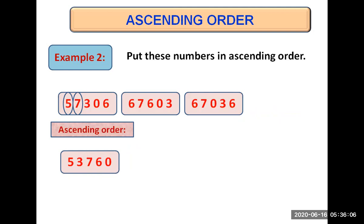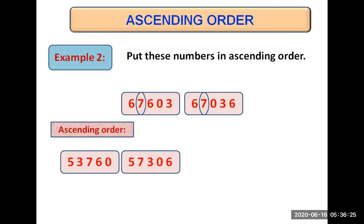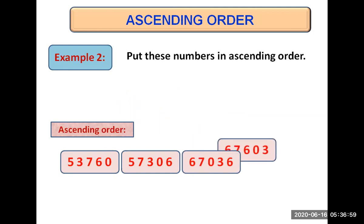The first number, 57306, comes at second place. The remaining two numbers are 67603 and 67036. Both have the same digit at ten thousands and thousands place, so we compare the hundreds place. One has six and the other has zero at hundreds place. As zero is smaller than six, 67036 comes at third place and 67603 goes at last place.